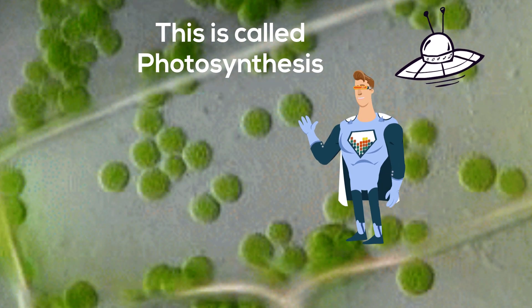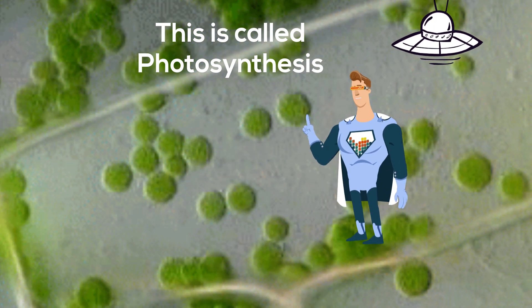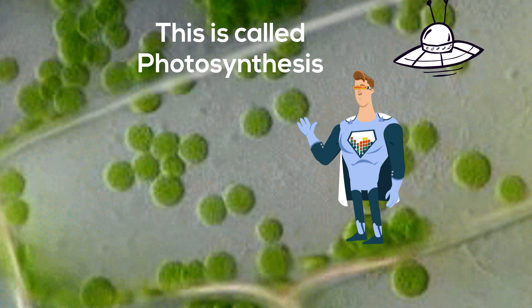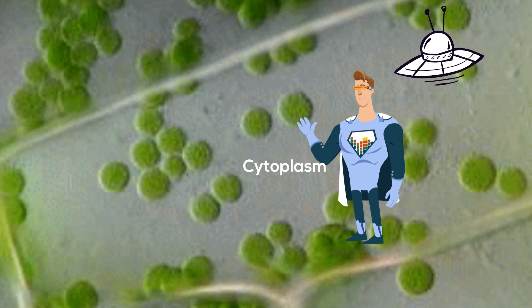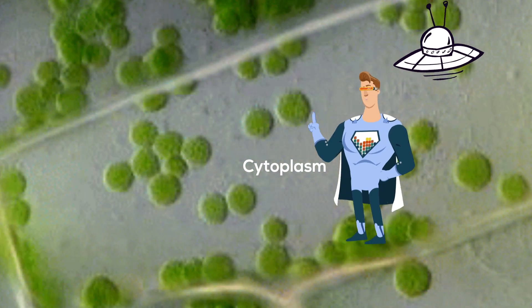The organelles float in a liquid substance called cytoplasm. It helps give the cell its shape and also contains important nutrients like salt and sugar that the cell needs.